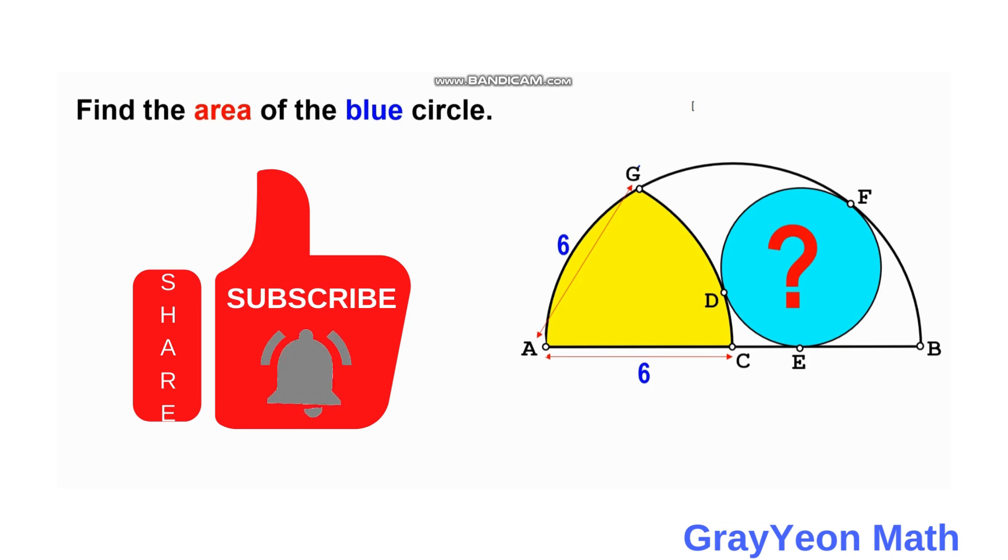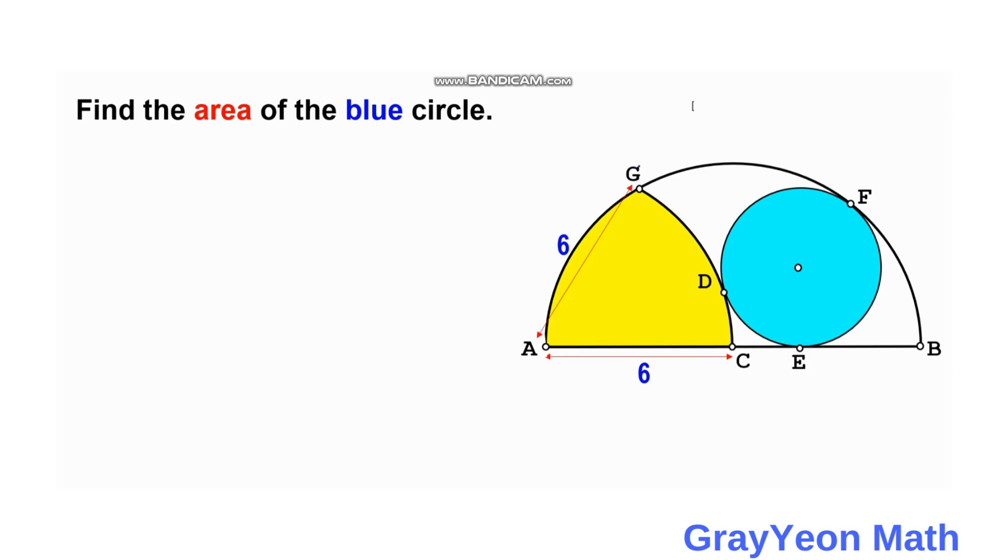And also tangent to the horizontal side of this semicircle at E. We are required to find the area of the blue circle.